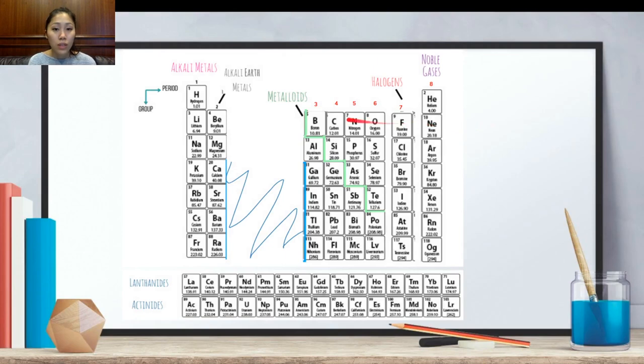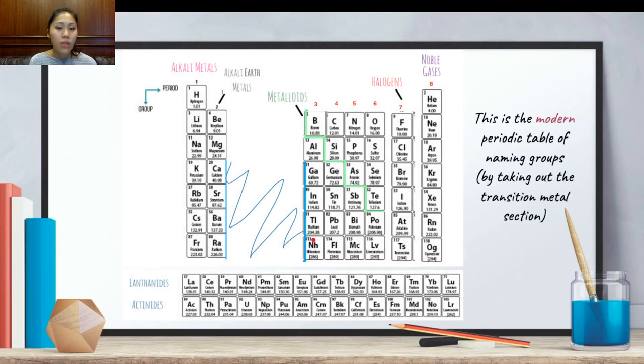As you can see here, these numbers are then changed with the removal of the transition metals. And this is kind of the modern-day periodic table. What it means is, majority of the time, whether it be your teacher or anyone else that's referring to group three elements, for example, or when they're referring to group eight elements, they're actually referring to the noble gases. They're not actually referring to the group eight that's in the transition metal piece.